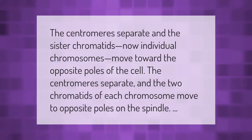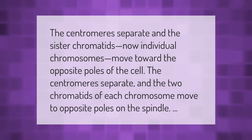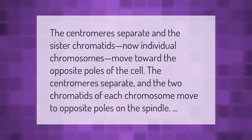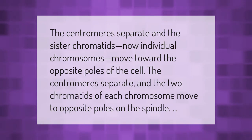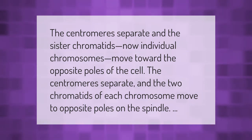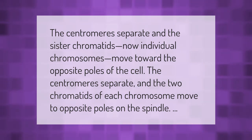The centromeres separate and the sister chromatids, now individual chromosomes, move toward the opposite poles of the cell. The two chromatids of each chromosome move to opposite poles on the spindle.